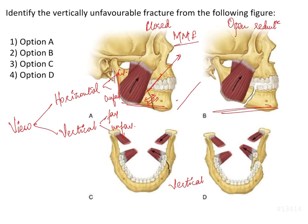Similarly, when viewing the mandible vertically, it can again be favorable or unfavorable. This depends upon the action of the medial pterygoid — and also the lateral pterygoid — both of which are attached to the angle of the mandible.